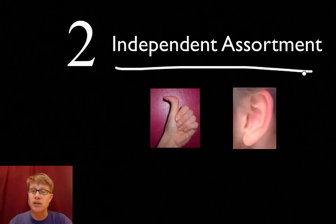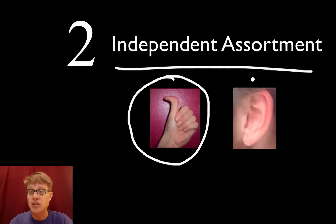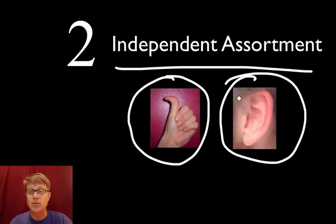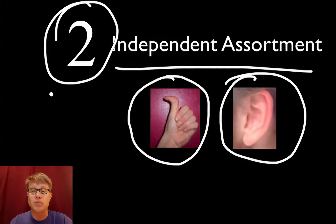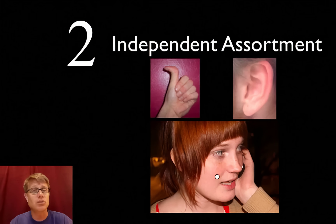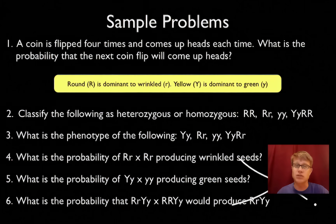The law of independent assortment says that the gene that causes hitchhiker's thumb — where your thumb actually bends back — and the gene that causes an attached earlobe don't affect each other. In other words they sort independently, so we can work problems without mixing these two together. They're not going to influence one another. Sometimes we'll find that some things do travel together — people who have red hair also have freckles, because those two genes are actually found on the same chromosome and seem to travel together. We're not going to deal with linked genes — we'll do that later. Independent assortment means that traits don't affect each other.